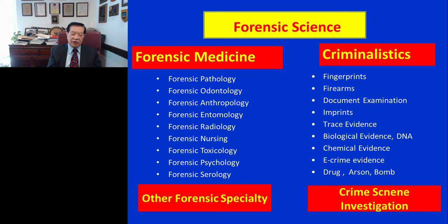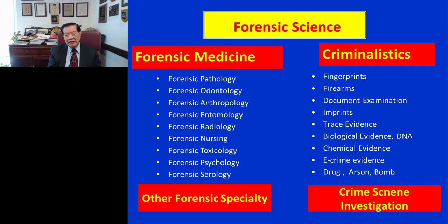The traditional criminalistic services in the forensic lab include fingerprint, firearm, document examination, tire-print evidence, trace evidence, serological evidence, DNA evidence, and chemical evidence. Today, we have a new area of service: e-crime evidence. We also handle drug, arson, and bomb investigations. The criminalistic laboratory provides laboratory testing for this evidence, while also conducting preliminary screening testing and scene reconstruction at the crime scene.